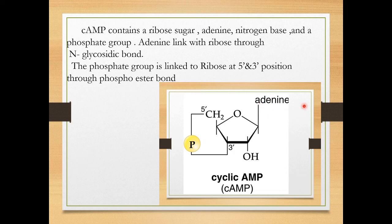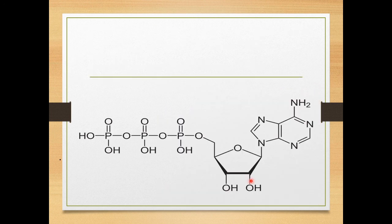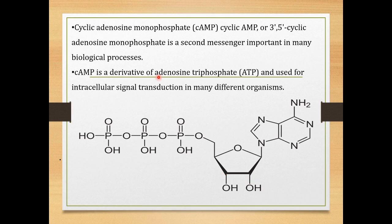There are three components: the nitrogen base is adenine, a ribose sugar, and a phosphate group. The adenine is linked to the ribose through a bond called the N-glycosidic bond, while the phosphate group is attached to ribose at the 5' and 3' positions — so it forms a cycle, which is why it is called cyclic AMP.